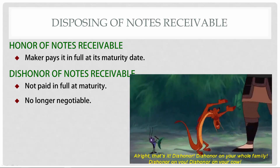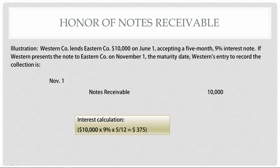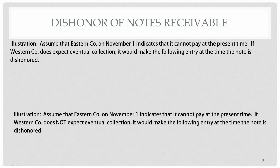Western Company lends Eastern Company $10,000 on June 1, accepting a five-month, 9% note. On November 1 Western presents the note and Eastern pays. We decrease the notes receivable balance and record the interest. The interest calculation is $10,000 × 9% × (5/12), counting June through October — that's five months. Interest revenue credited is $375, so total cash received is $10,375.